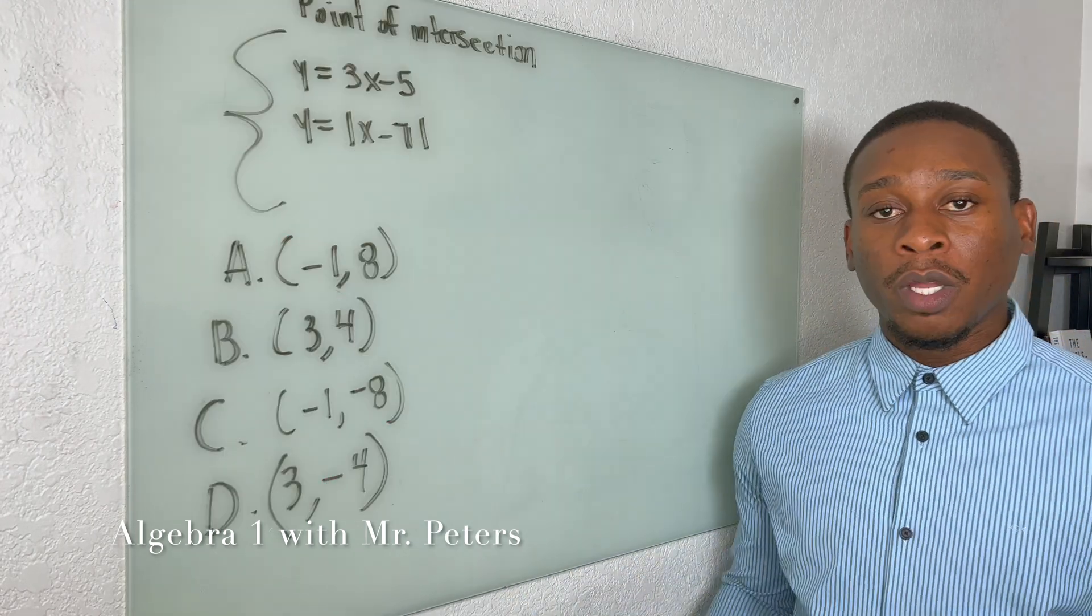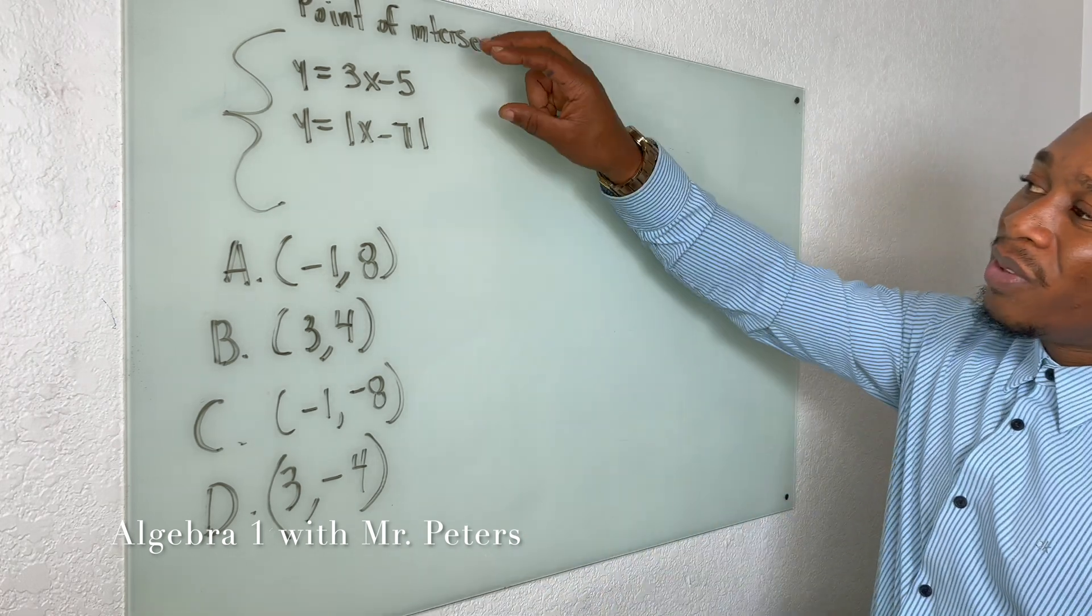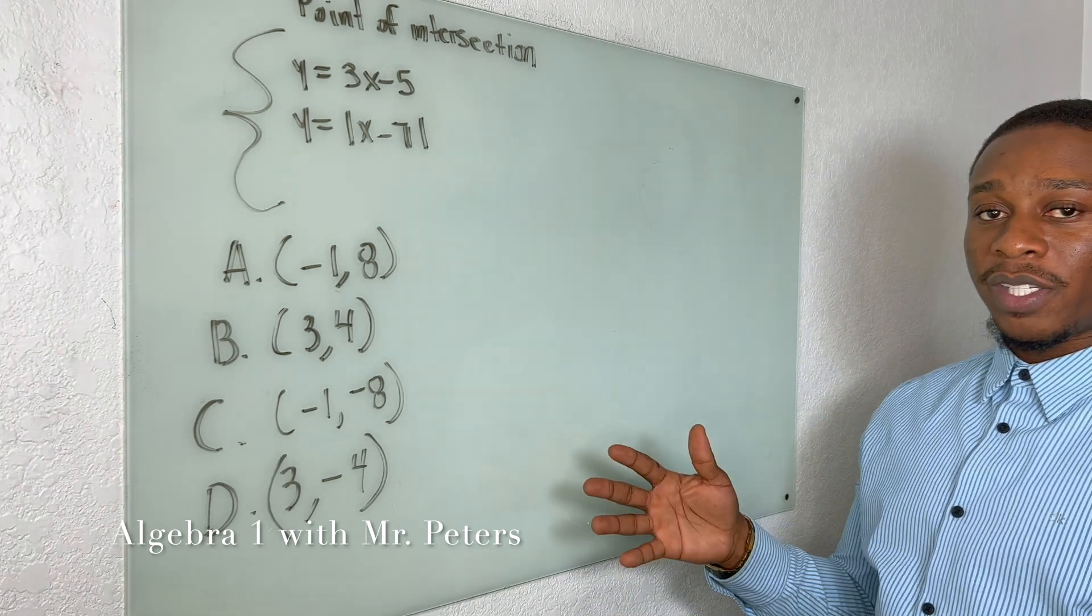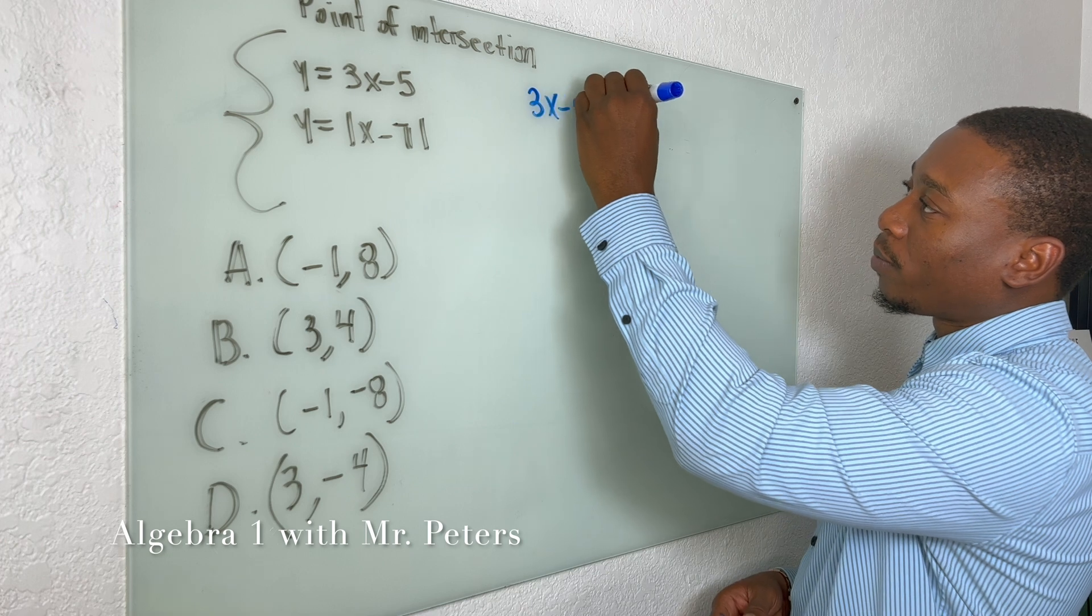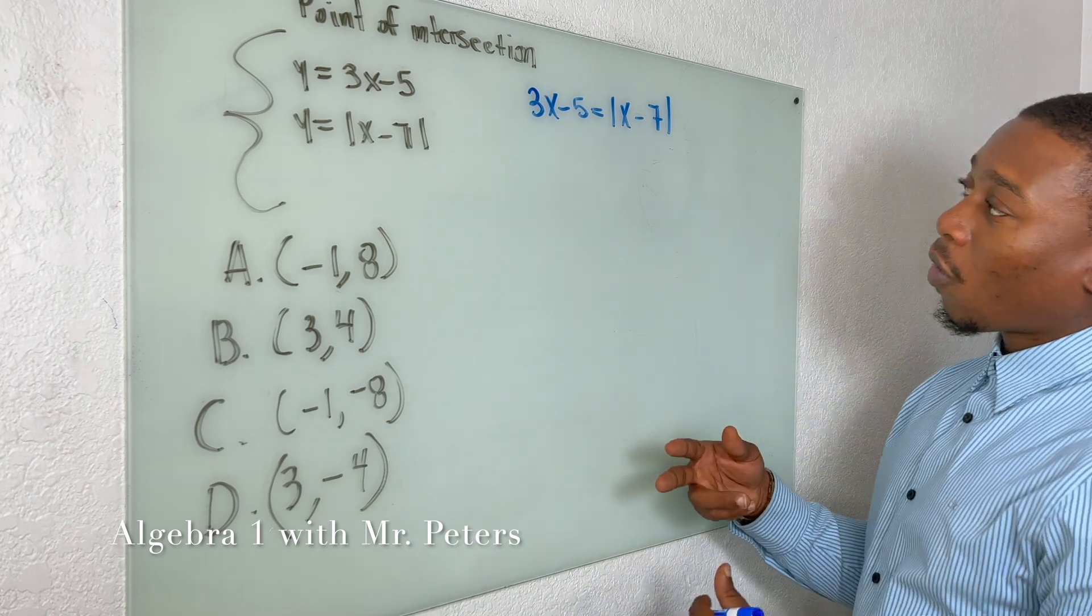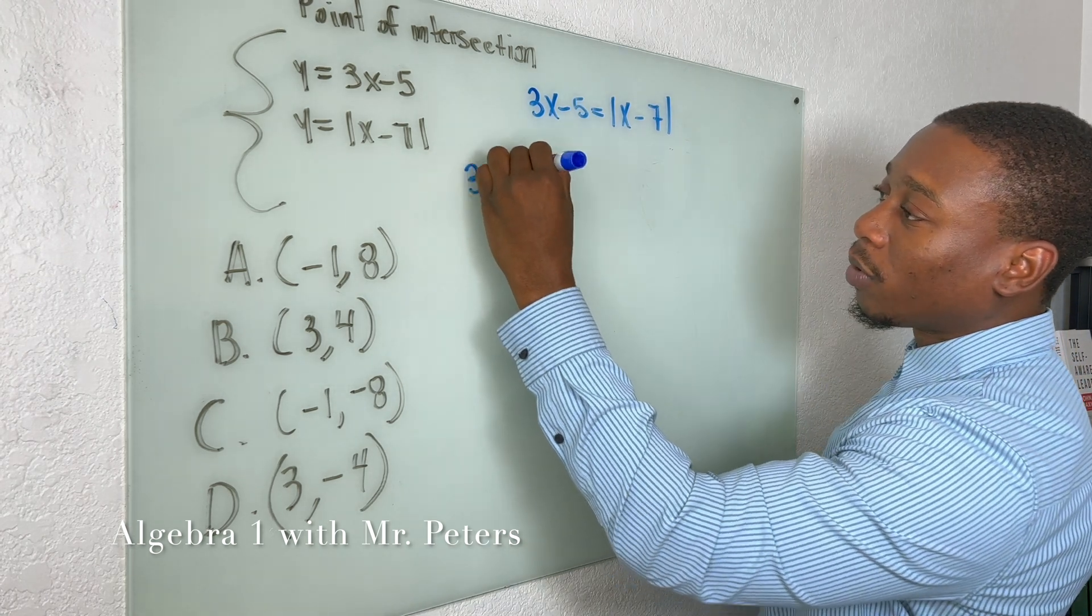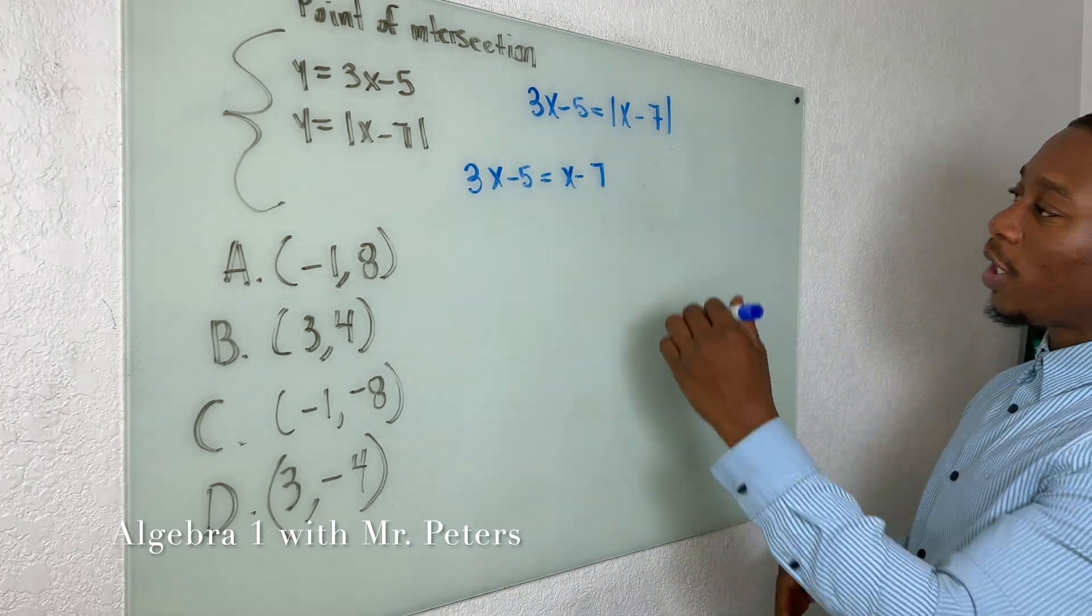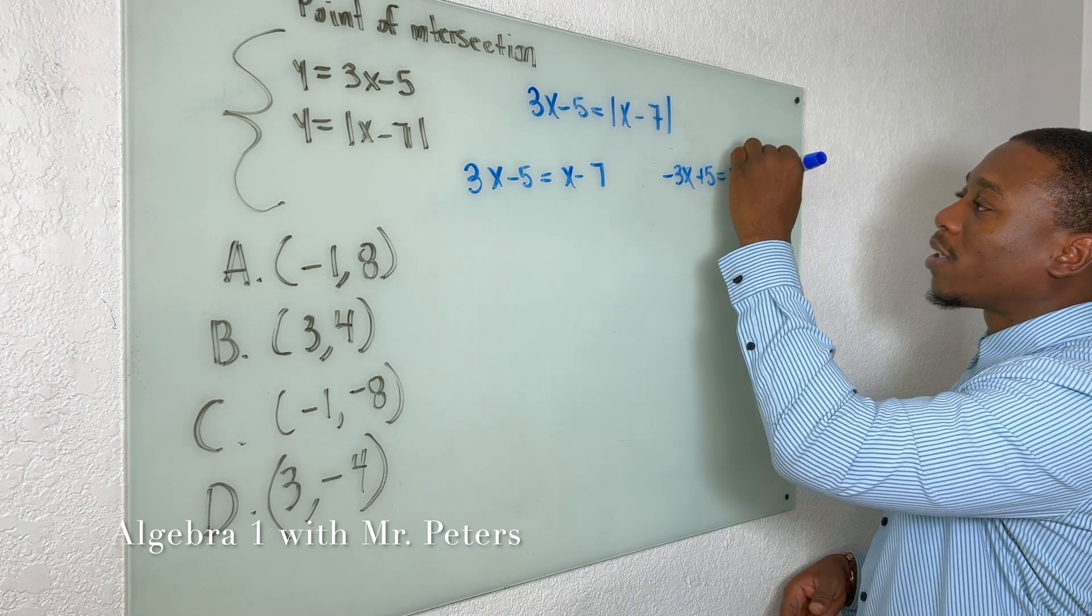Let's go on to problem number 2. In problem number 2 guys, we have absolute value in systems of equations. But this is a little bit different from what we're used to. When it's in this format, when it's y equals, we can solve this and find the point of intersection by setting the equations equal to each other. Now, just remember, when we have absolute value, that means we're going to have two equations, right? So this right side is not what's going to change. It's going to be the left.